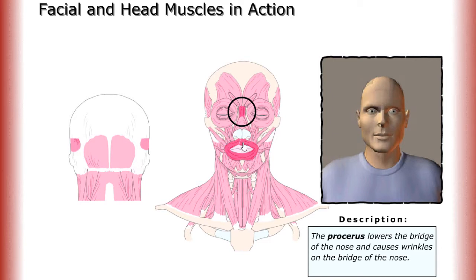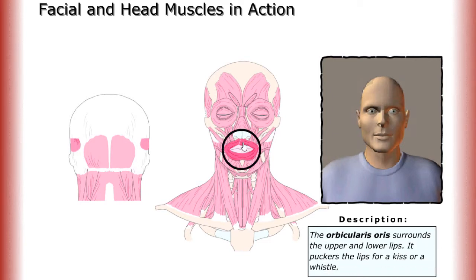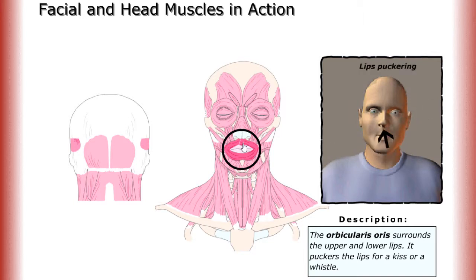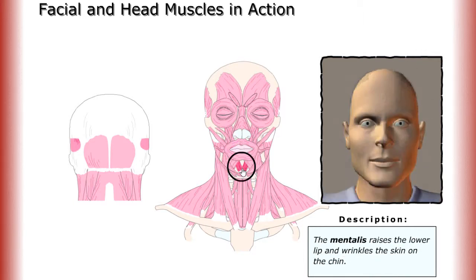The orbicularis oris surrounds the upper and lower lips. It puckers the lips for a kiss or a whistle. The mentalis raises the lower lip and wrinkles the skin on the chin.